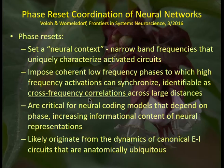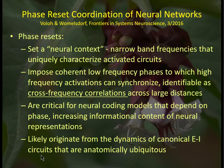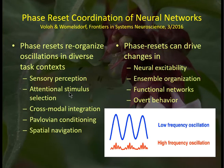These are cross-frequency correlations across large distances, critical for neural coding models that depend on phase and increase the informational content of neural representations. They likely originate from the dynamics of canonical excitatory-inhibitory circuits that are anatomically ubiquitous throughout the cortex. Phase reset reorganizes oscillations across diverse task contexts.